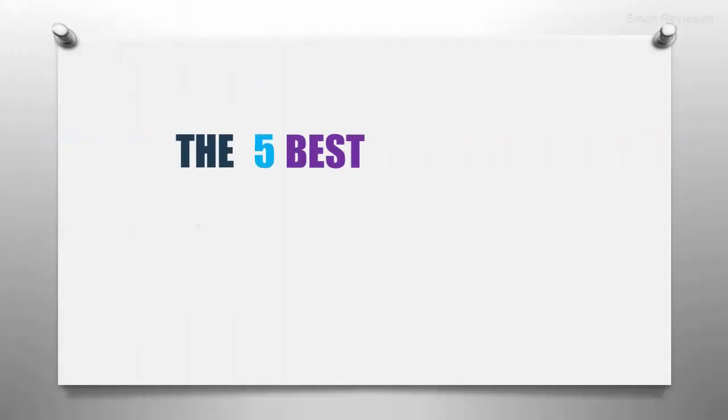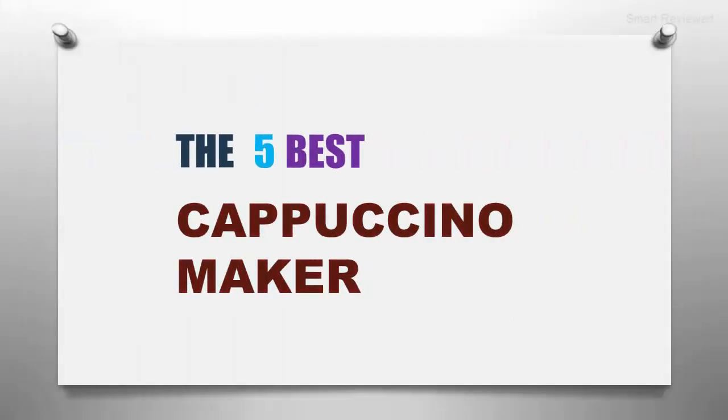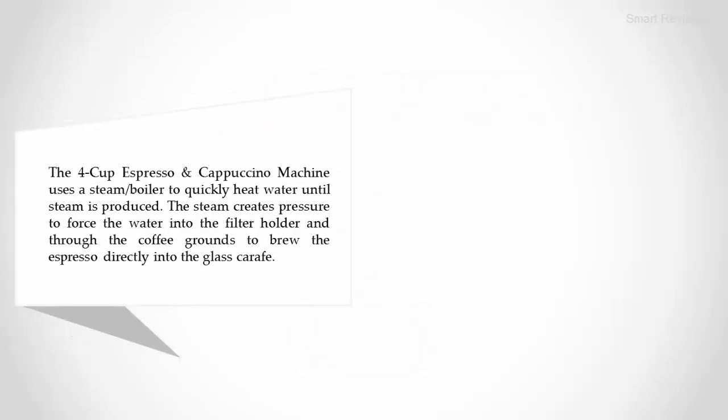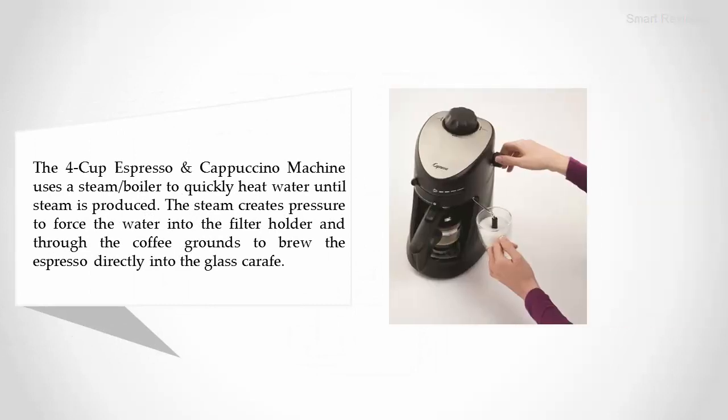The Smart Review presents the 5 best cappuccino makers. Let's get started with the list. Starting off at number 5: Capresso 300.301 4-Cup Espresso and Cappuccino Machine. The machine uses a steam boiler to quickly heat water until steam is produced. The steam creates pressure to force water into the filter holder and through the coffee grounds to brew espresso directly into the glass carafe.